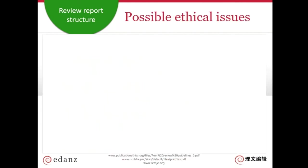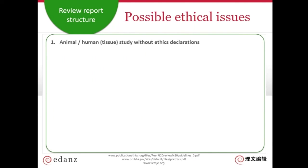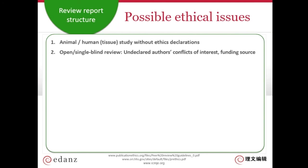There might be possible ethical problems — covered in the first webinar but important to revisit. There might be problems in animal and human studies with ethics. In journals that use open or single-blind review where the reviewer can see the author's name, you might realize the author has conflicts of interest or hasn't mentioned the funding source. Do you recognize the work you're reading? This might be duplicate publication. Do the results sound too thin to be meaningful? This is salami slicing, where authors try to cut results into many different papers.